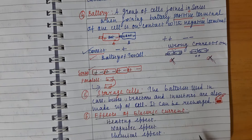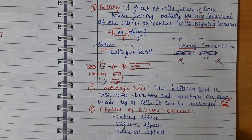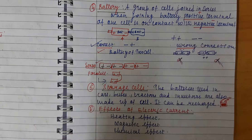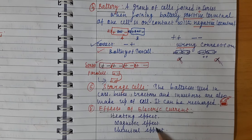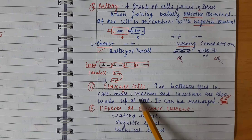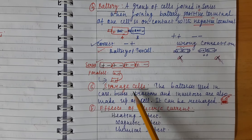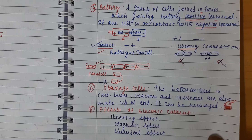The effects of using electric current: when electric current passes through a conductor, it produces three effects — heating effect, magnetic effect, and chemical effect. The chemical effect is also the basis for electrochemical reactions, such as in storage cells.